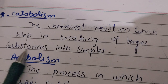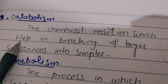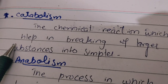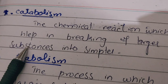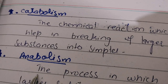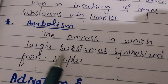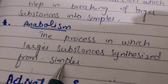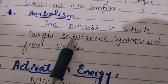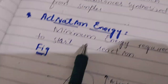Catabolism is the chemical reaction which helps in breaking larger substances into simpler substances. For example, when DNA is catabolized, it breaks down into smaller components. Anabolism is the process in which a larger substance is synthesized from simpler ones — when larger substances form from simple substances, it is called anabolism.